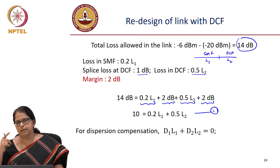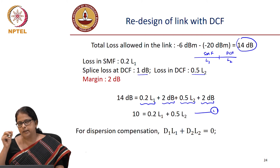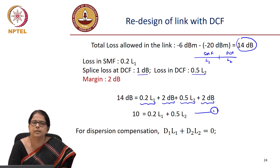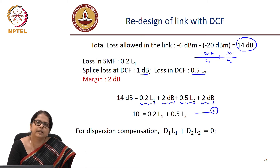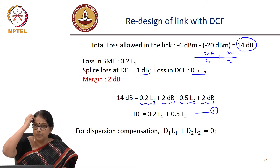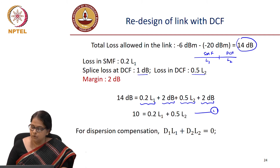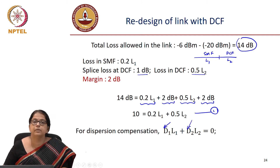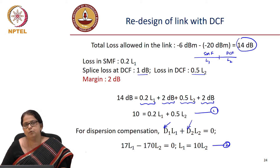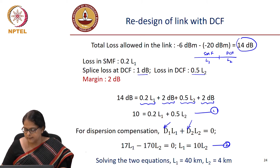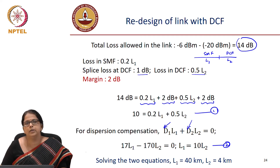We are not using the third-order dispersion relation because this is only a 10 Gbps system with only 0.16 nm bandwidth. In that range of delta-lambda, D versus lambda is assumed linear, so the slope is ignored. Substituting the known dispersion values of SMF (+17 ps/km/nm) and DCF (−170 ps/km/nm) gives the second equation. From the two simultaneous equations, L1 = 10 × L2, and substituting gives L1 = 40 km and L2 = 4 km.